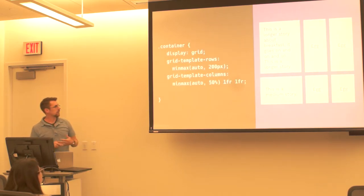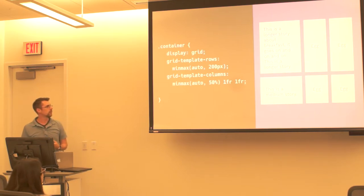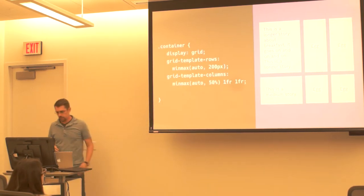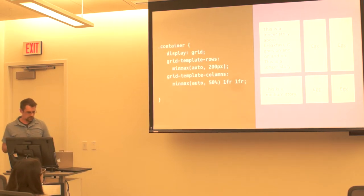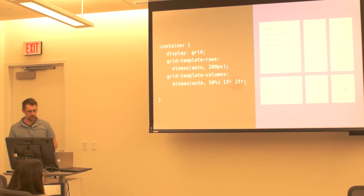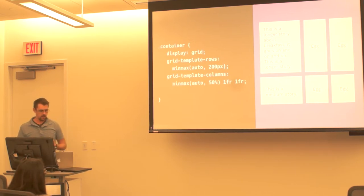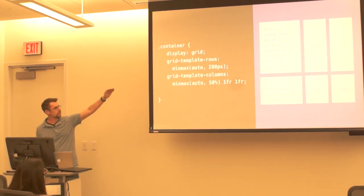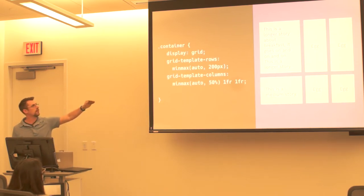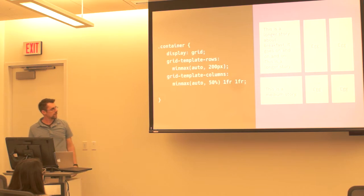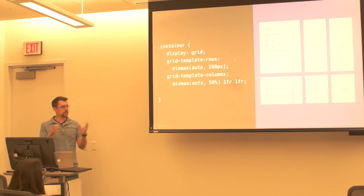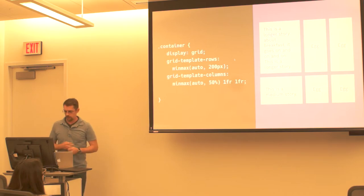There's another kind of unique thing here that's been introduced, which is this property called minmax, which is pretty cool. The way it works is you give it two values - obviously the first one being the minimum and the second one being the maximum. And based on your content, that piece of the grid will scale to fill that. So here we've said the row can be as small as we want, but I want the maximum to be 200 pixels in height. And then for something like the columns, I could say auto for the minimum, but maybe I only want it to grow as big as 50% of the parent container. And then we can tie in some of those traditional fractional units as well.